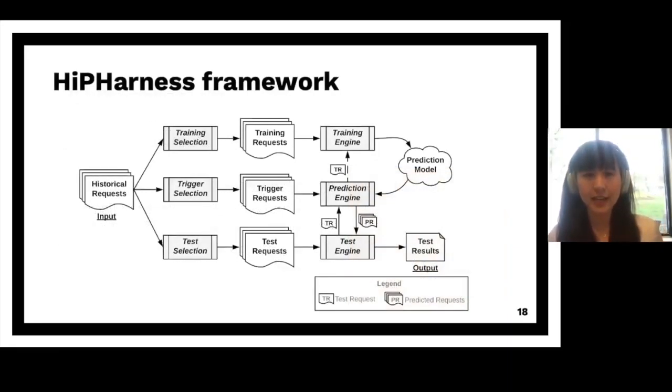To ease our empirical study, we first developed this hip-hardness framework. I won't go into the details, but basically, it is a customizable framework that allows you to study the impact of different aspects of the prediction models. Like, you know, you can turn the knobs with different parameters to study their impact.